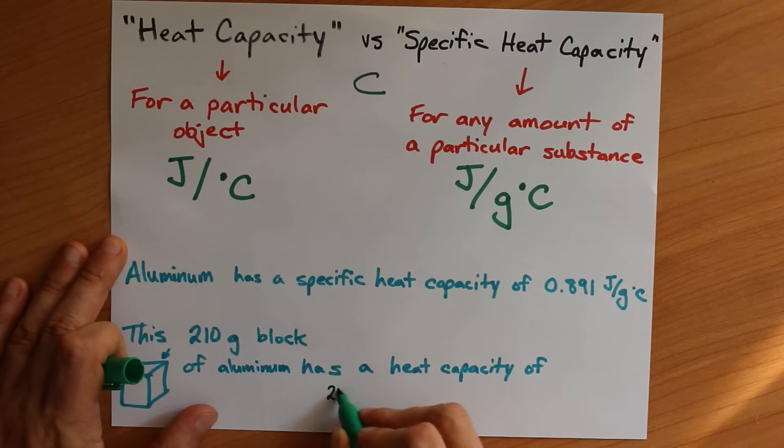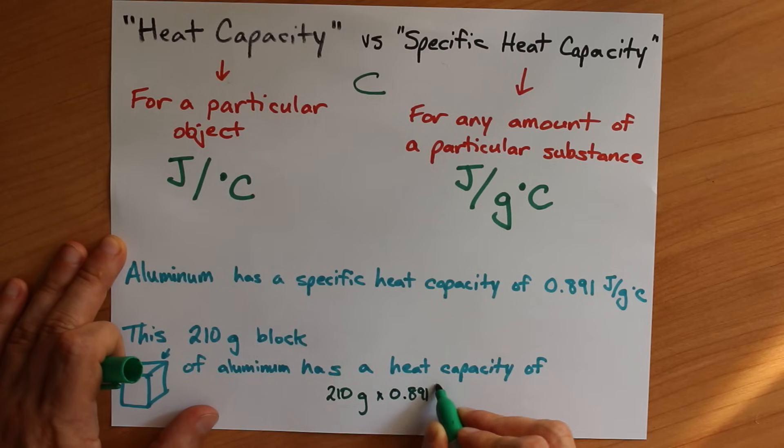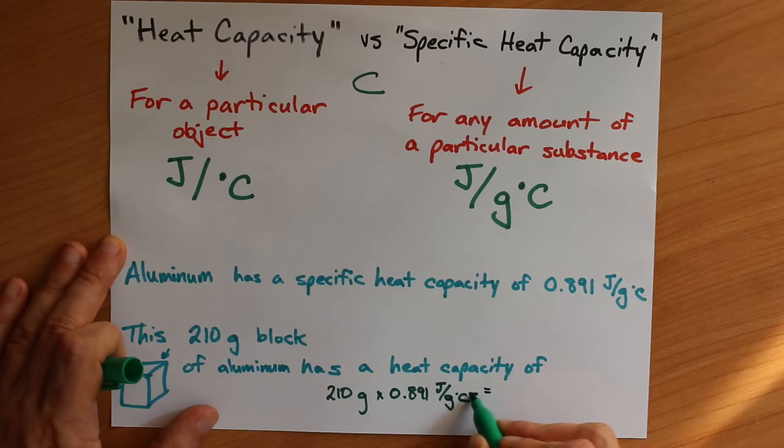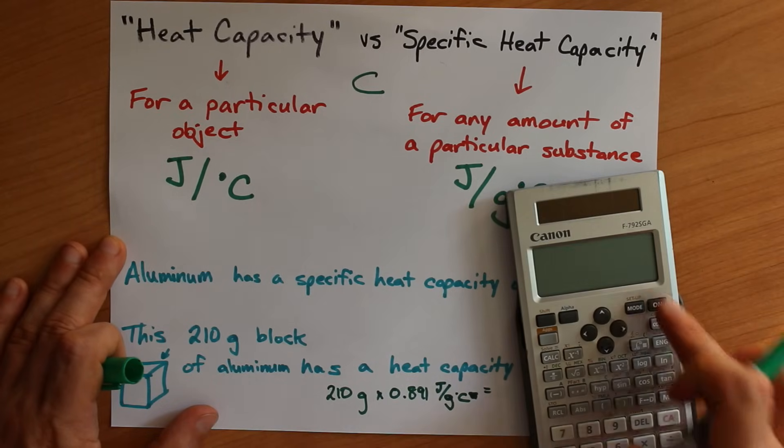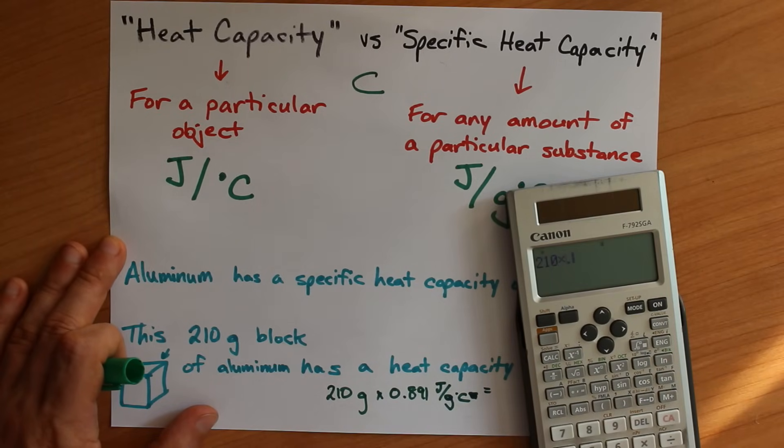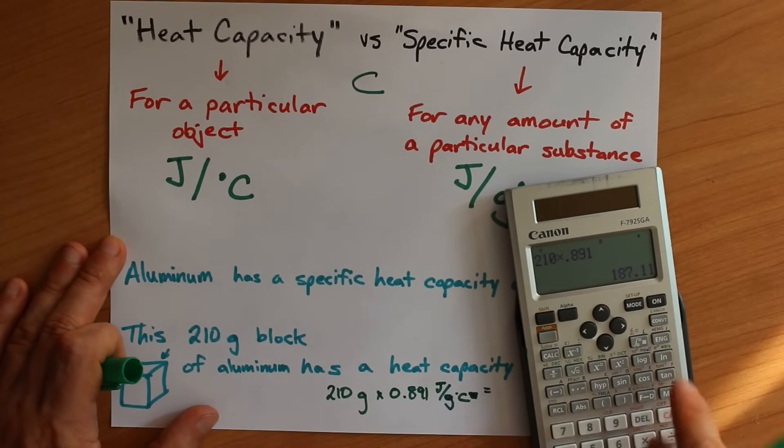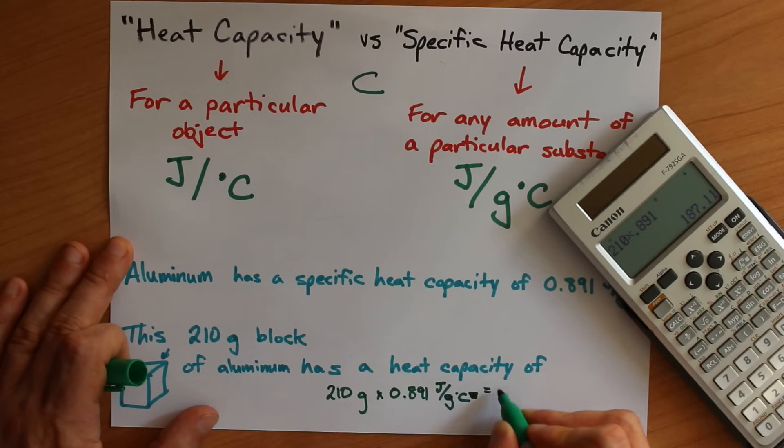And so this 210 gram block requires 0.891 joules of energy for every gram of it to be heated by a degree Celsius. If you multiply that mass times the specific heat capacity, it's going to give you the heat capacity of that particular 210 gram block. That is 187.11 joules per degree Celsius.